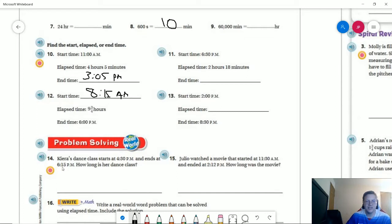Let's see, Kira's dance class starts at 4:30 PM and ends at 6:15. So 4:30 to six would give us 90 minutes, or an hour and a half plus 15 minutes. So you could either say 105 minutes or one hour, 45 minutes.